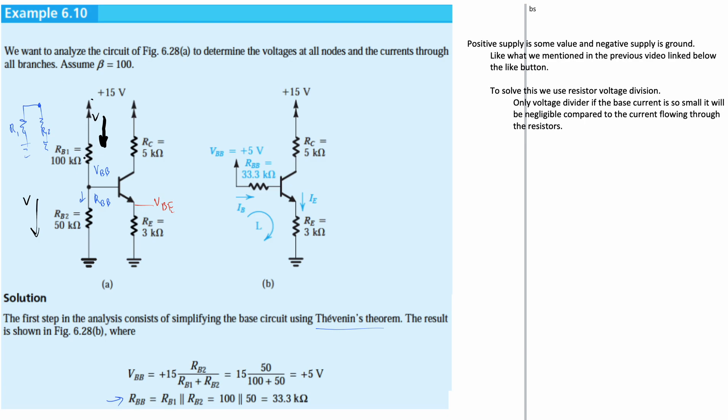So when we rewrite this, we are going to use Thevenin's theorem. Think about it as looking from this point right here, which would be right here, and we have this circuit if we were to rewrite it because our RB1 and RB2 are in parallel with each other. So with this, we have our 15 volt source voltage, and then we have our resistor values. We solve this out, we're going to get 5 volts. We can also calculate the resistance across here, which is 33.3 kilo ohms, and then we can plug this in here.